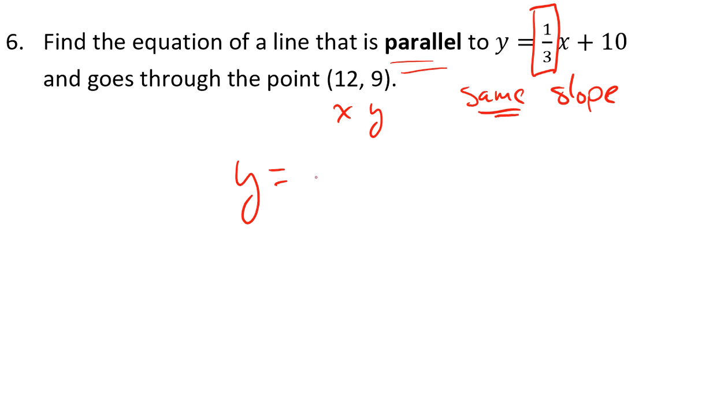I can look at this generic equation in slope intercept form and plug in the value of y that I have, 9, the slope that I have, 1/3, and my x value of 12. When I do that, I can see my only variable remaining is b.